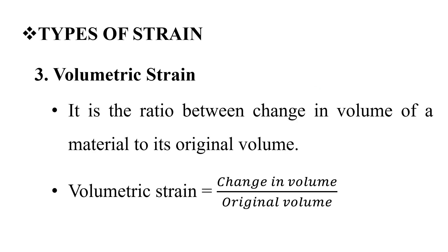The third type of strain is volumetric strain. It is the ratio between change in volume of a material to its original volume. Volumetric strain is equal to change in volume divided by original volume, that is ΔV by V.